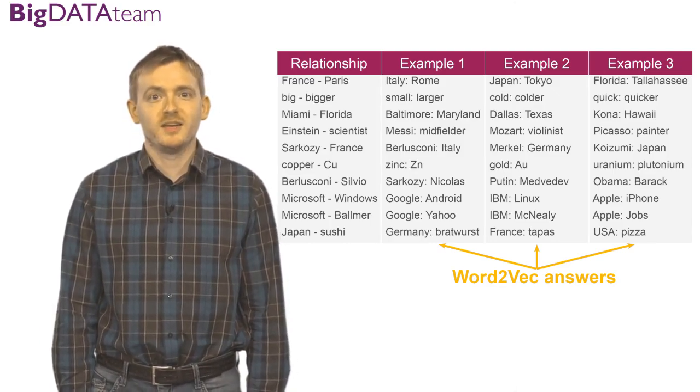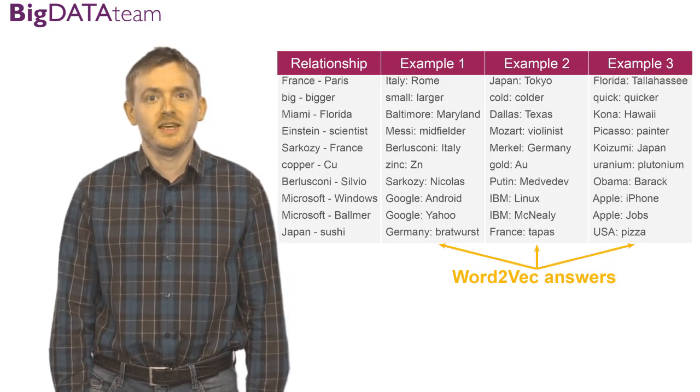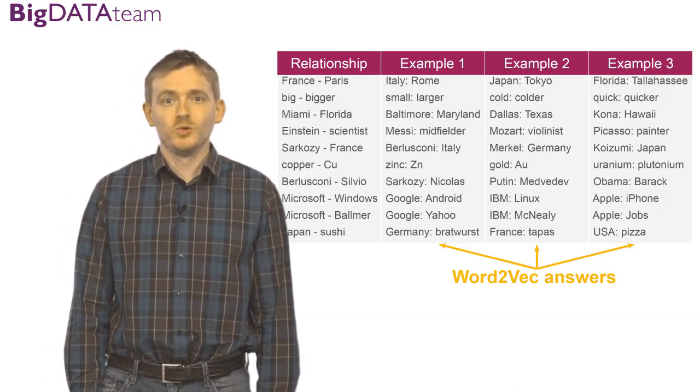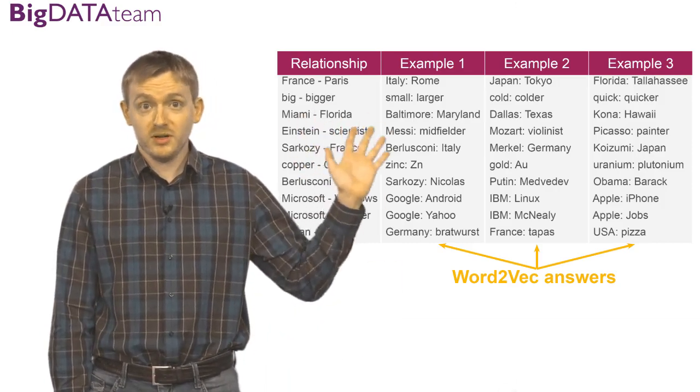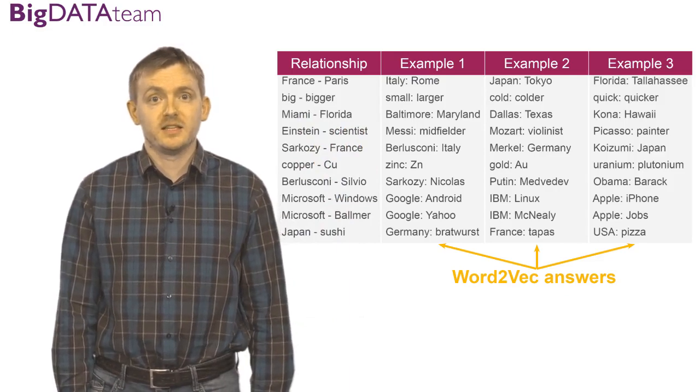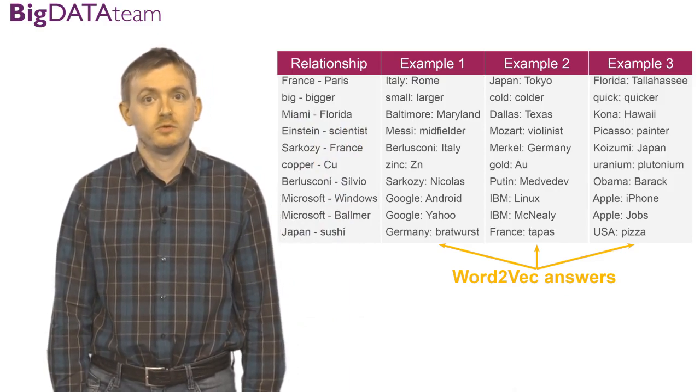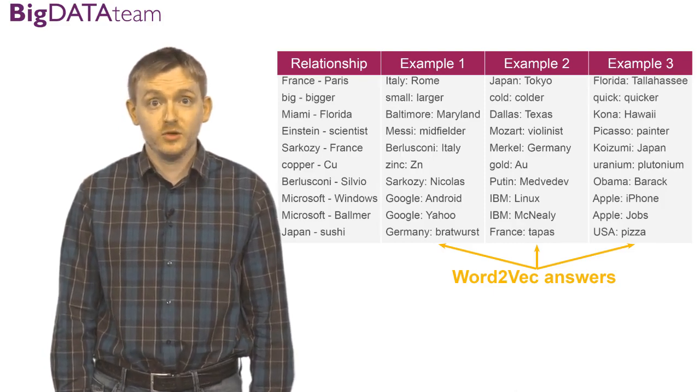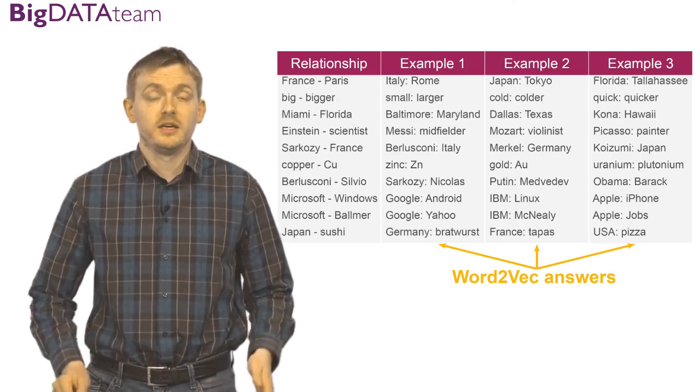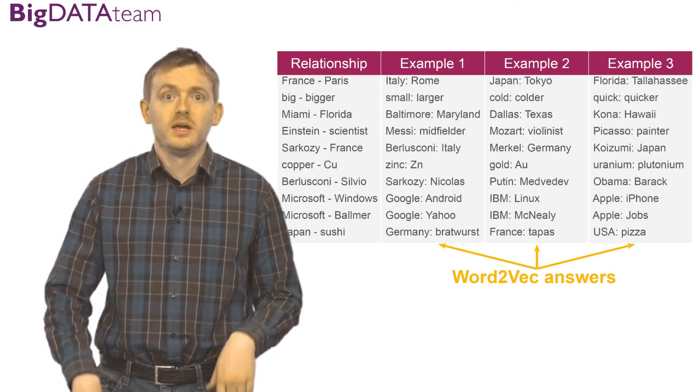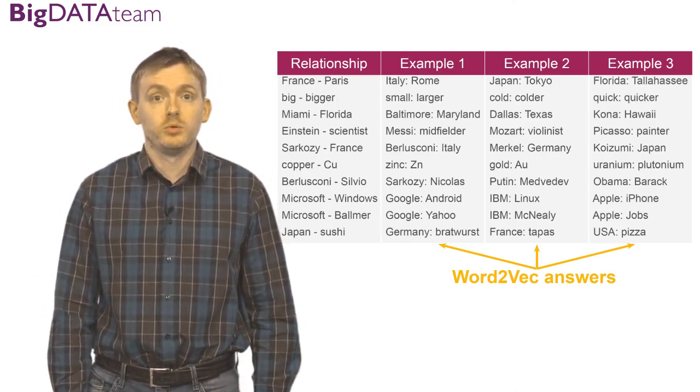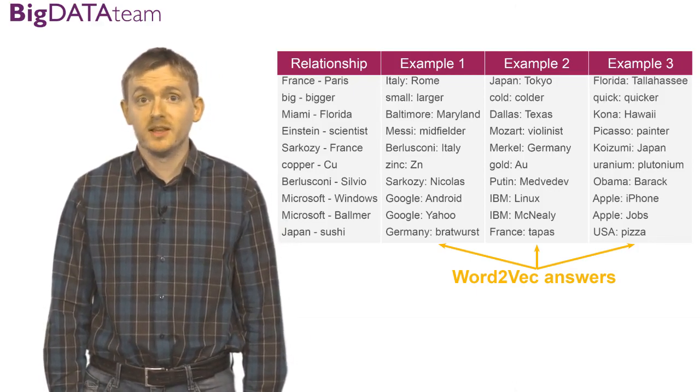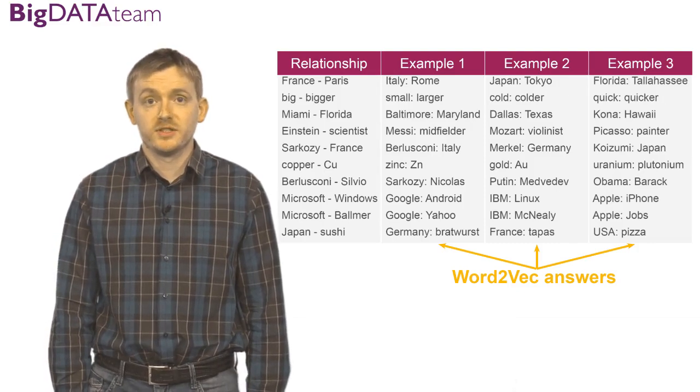A very interesting line about chemistry is the shorthands for chemical elements. Cu stands for copper. Zn stands for zinc. Au stands for gold. And in the case of uranium, it is not the right answer—here should be capital U, but we see the word plutonium. And you can explore this table and find many interesting relationships.